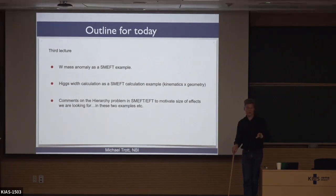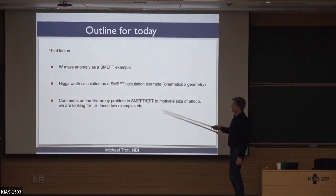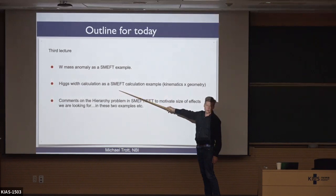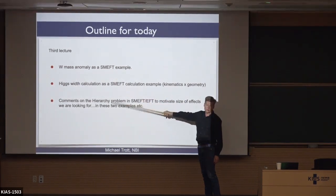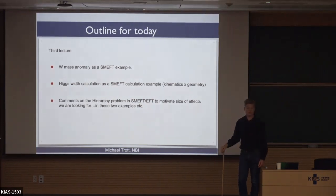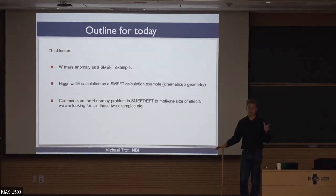Using effective field theory thinking lets you ask questions in an efficient manner related to such an anomaly, so you can really interpret the experimental measurements and what they tell you from the standard model in a clean fashion. I'm going to talk about this with a tabulation for the Higgs — it's an interesting calculation to go through because it orients you towards how the complexity of the theory, even at dimension six, is pretty significant.